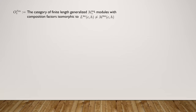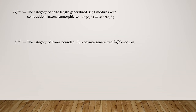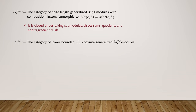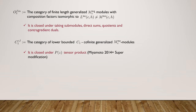We now define two categories. O_{C-finite} is the category of finite length generalized modules with composition factors that are irreducibles not isomorphic to Verma modules, since Verma modules are not C1 cofinite. C1 is the category of lower bounded C1 cofinite generalized modules. The first category is good because it is closed under taking submodules, direct sums, quotients, and contragredient duals — all ingredients needed for the Huang-Lepowsky-Zhang tensor category theory. The second category is nice because it is closed under the P(z) tensor product, as proved by Miyamoto in 2014 with a super modification that we verified.